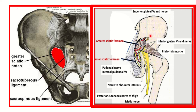In the second picture, we can see the different structures located in the greater sciatic foramen. First, there is the piriformis muscle, which passes through the greater sciatic foramen and divides it into an upper part and a lower part.